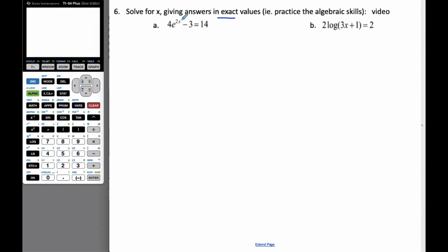So in order I have to get the e all by itself. So it's 4e to the 2x and I add the 3 over, which makes it 17. I divide by the 4, which makes it 17 over 4.